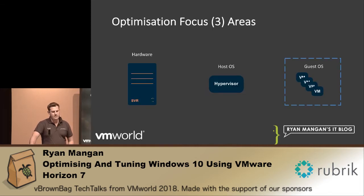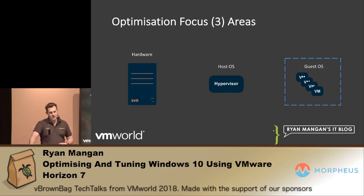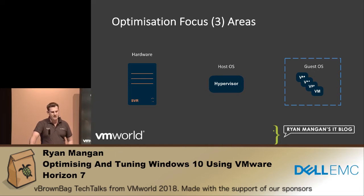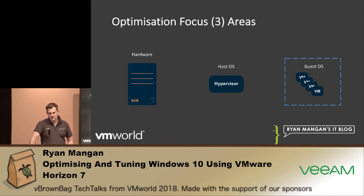When we talk about VDI and end-user computing, optimization is a very big, important part of delivering mass users to a virtual infrastructure. If you just deploy defaults, you end up wasting resources and costing the business more money. The user experience can also vary from poor to terrible. Looking at optimization as an ecosystem, you have the hardware itself, the hypervisor, and then the guest operating system. Today we're going to predominantly speak about guest operating system optimizations.